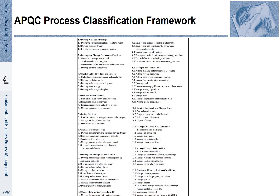The APQC framework defines various classes of processes and more fine-grained processes at different levels of detail. For example, consider the first category on the upper left: this is called 'Develop Vision and Strategy.' It includes all related processes and has three subcategories: Define the business concept and long-term vision; Develop business strategy; and Execute and measure strategic initiatives. The APQC framework distinguishes further more detailed processes for these subcategories.